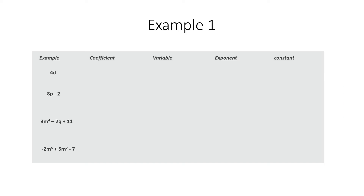Let's do some examples. The table asks for the coefficient, variable, exponent, and constant. First example: negative 4d. The variable is d. The coefficient — the number in front of the variable — is negative 4. There's no explicit exponent, so we write 1. There's no constant, so we put 0 and a dash to represent that we do not have a constant.